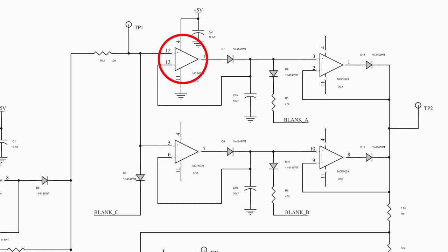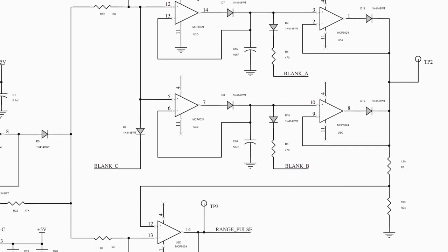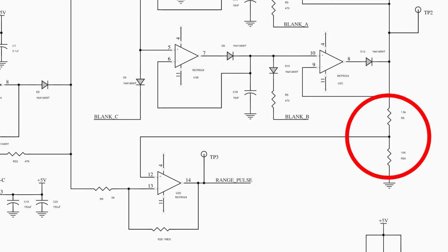Since the return echo signal varies dramatically in amplitude depending on how far down the tube it has to travel, we need some way to make this reference voltage track the incoming signal so that it always slices it in the same place. U3B and D form two identical sample and hold peak detector circuits. These feed into U3A and U3C which forms an analog OR gate which passes the higher of the two voltages through to the output.